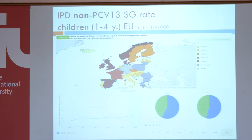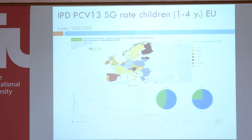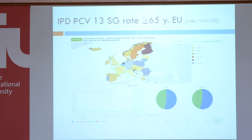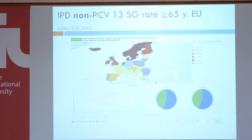And also for the older population, it is like that. For children also, there are non-vaccine serotypes — there is a trend in Europe toward augmentation of invasive pneumococcal disease caused by non-conjugate vaccine serotypes. The effect on serotypes in the older population is not that clear at this moment in Europe. For non-vaccine serotypes, you also have a trend of augmentation of invasive pneumococcal disease by serotypes not included in the conjugate vaccine.